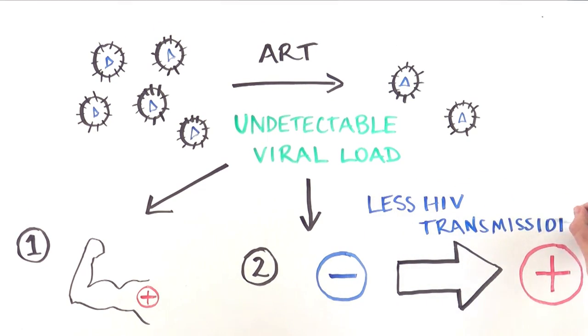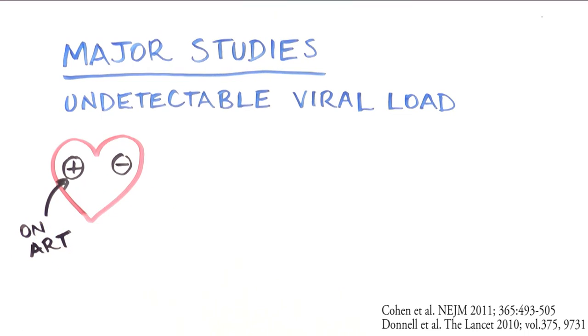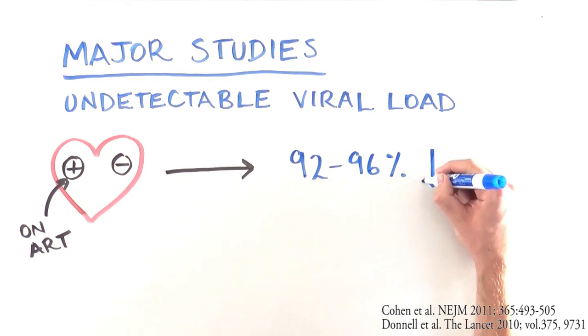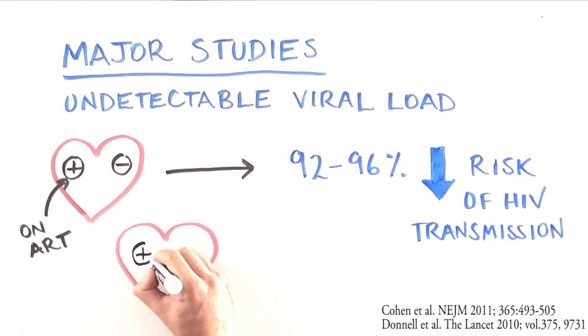Because a person with undetectable viral load has less HIV virus, they are also less likely to transmit the virus to an HIV negative person. In two major studies with couples, having the HIV positive partner on ART led to a 92 to 96% reduction in the risk of HIV transmission to the negative partner. That's a very significant amount.